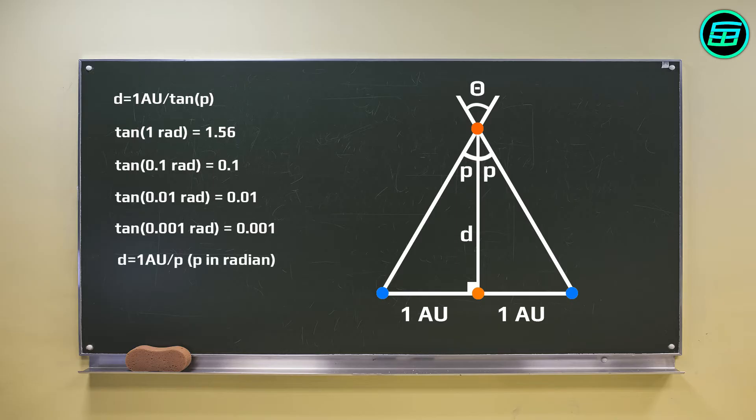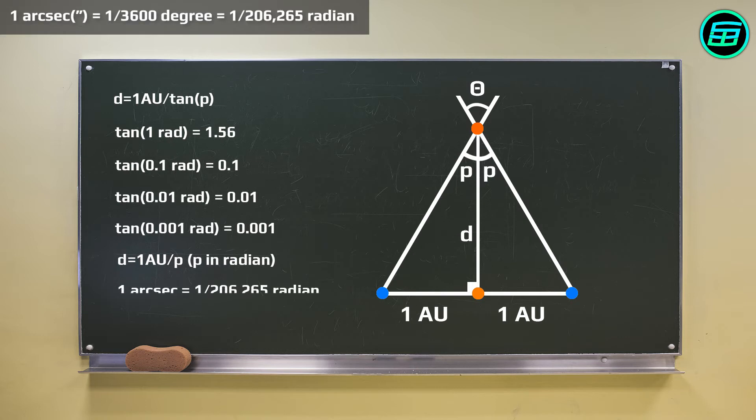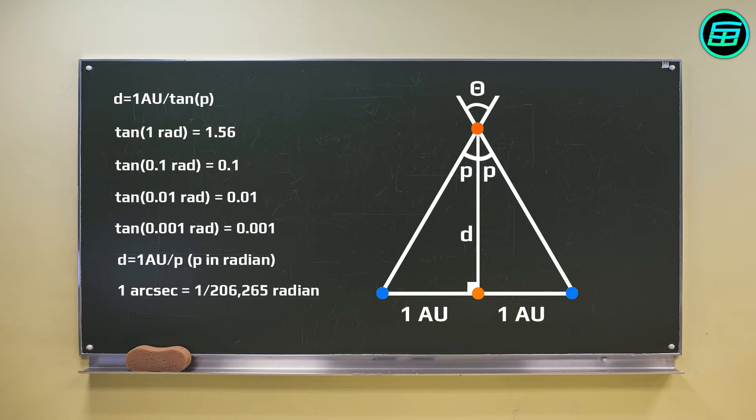But astronomers generally use arc seconds instead of degrees or radians. One arc second is one 3600th of a degree and one over 206265 of a radian. If we rearrange the formula using one arc second as the parallax angle, the formula becomes d equals 206265 AU over one arc second.